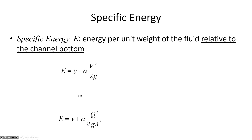Specific energy is the energy per unit weight of fluid relative to the channel bottom - there's no Z term. The velocity head can be expressed as q² divided by 2gA². The utility of that is that oftentimes the unknown is the depth, and it's not convenient to express velocity in terms of an unknown depth. But flow rate Q is often given, and we know the channel width, so the unknown is just depth y.